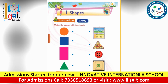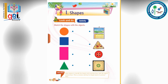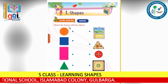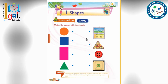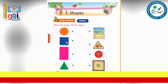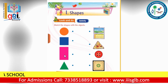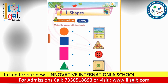Here's the activity — what we have to do is look and match the following shapes with the object. You have to match the shapes with the objects. The circular one — this is a circle shape, this is a square, this is a rectangle, and this is a triangle.